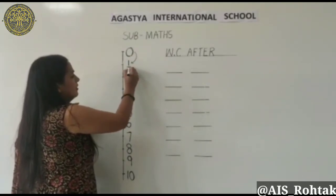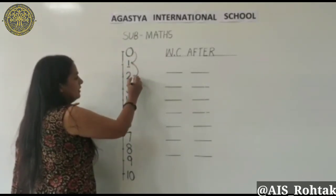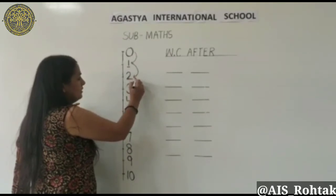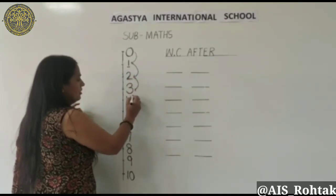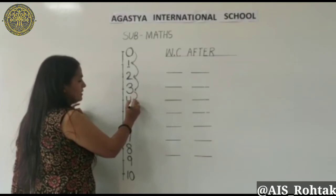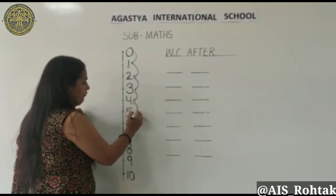1. Aur 1 ke baad kya hai? 2. 2 ke baad kya aega? 3. Aur after 3 kya hai? It's 4.